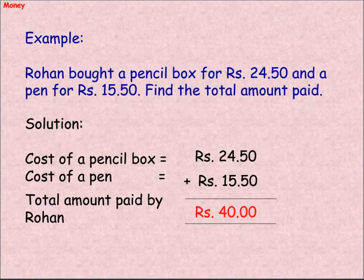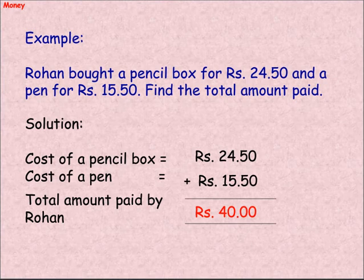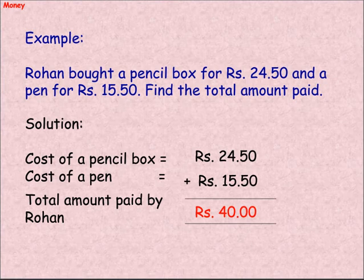Example: Rowan bought a pencil box for rupee 24.50 and a pen for rupee 15.50. Find the total amount paid. Solution: Cost of a pencil box equals rupee 24.50. Cost of a pen equals rupee 15.50. Total amount paid by Rowan equals rupee 24.50 plus rupee 15.50 equals rupee 40.